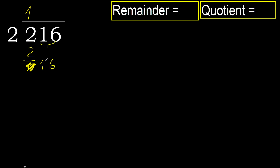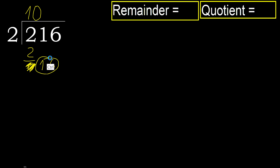2 numbers here, so complete. Always complete with 0. Because here we have 2 numbers: 16. 2 multiplied by 8 is 16. 16 is not greater.